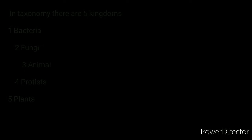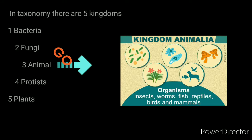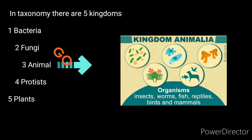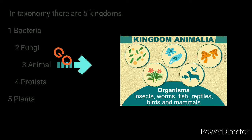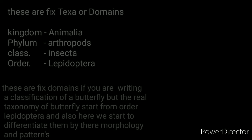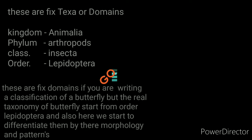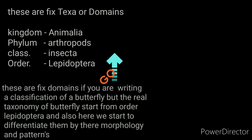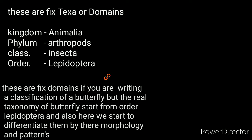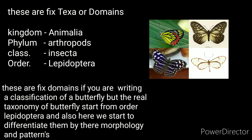In taxonomy there are five kingdoms: bacteria, fungi, animal, protista, and plants, as you are able to see here. Insects come under kingdom Animalia. These are fixed domains if you're writing a classification of a butterfly, but the real taxonomy starts deeper.